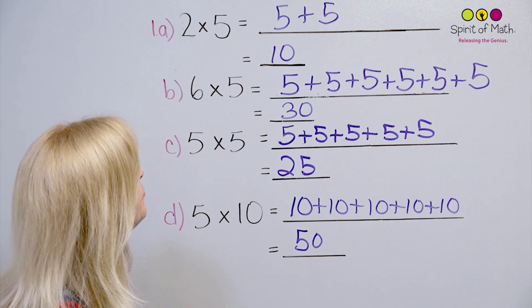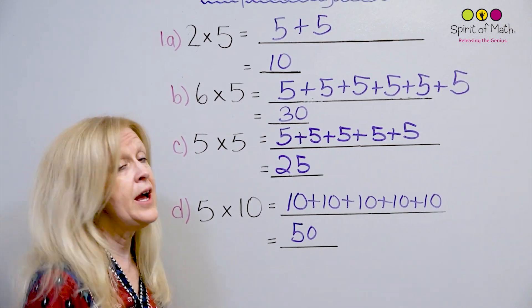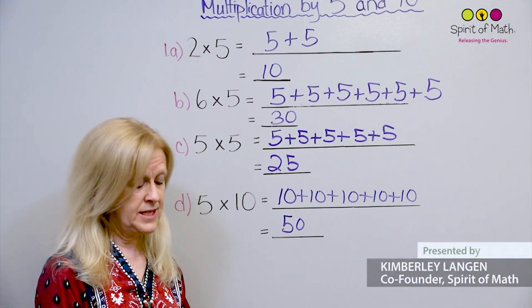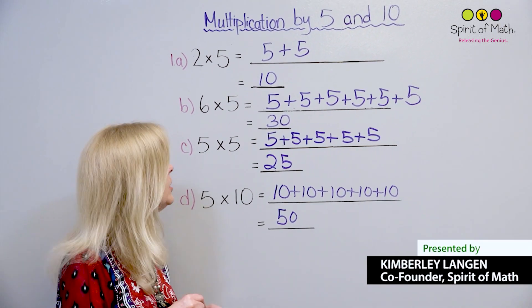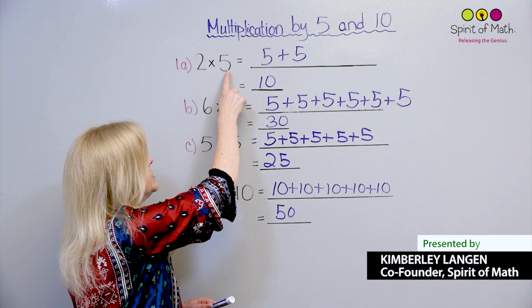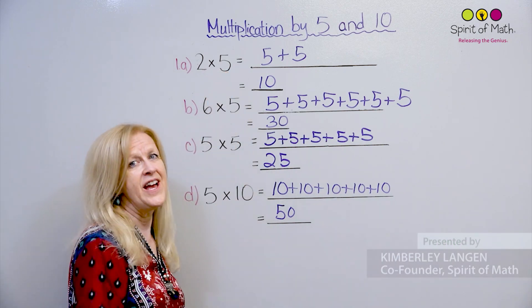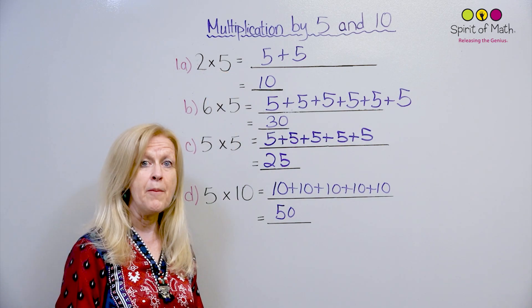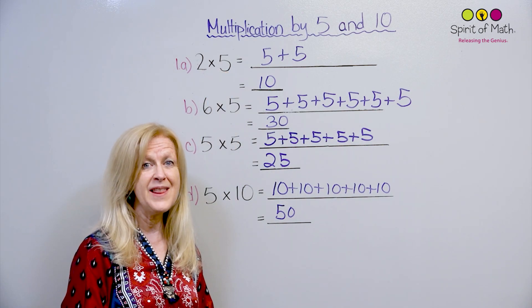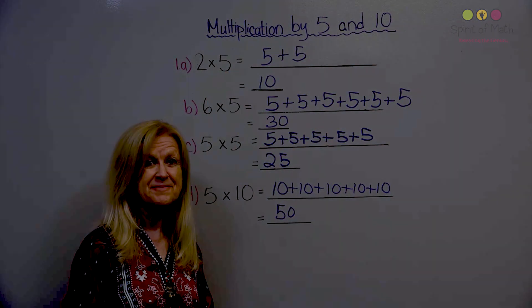So multiplying by 5 and 10 is very similar. It's how many groups of 5, and then you skip count by 5s. And that's it.